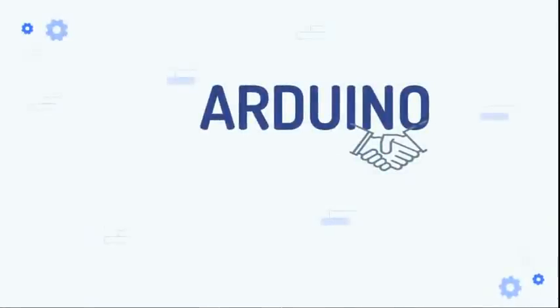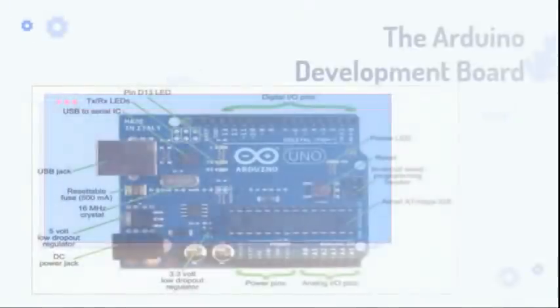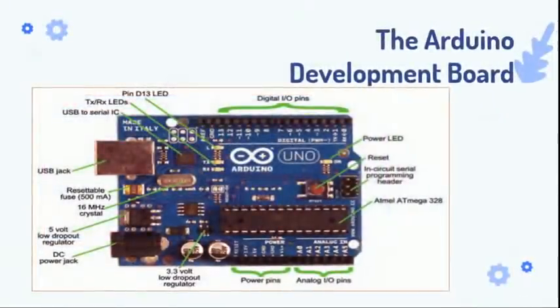Next is hardware. About hardware — first one is Arduino. Arduino is one of the hardware we can use for collecting data. It's basically an open source electronic platform and it's easy to use as both hardware and software. Here we have a picture of Arduino — it has a USB jack, five-volt raw port, or DC power jack.